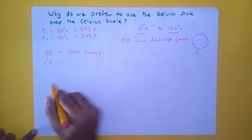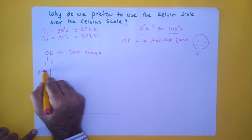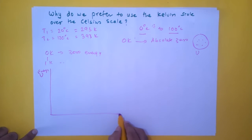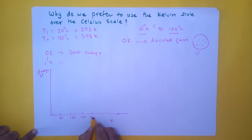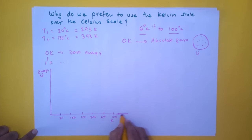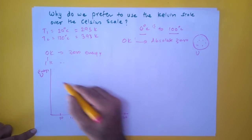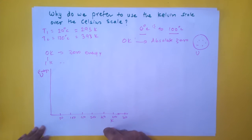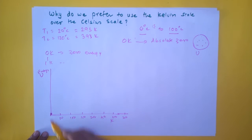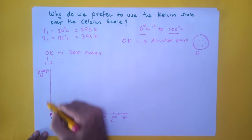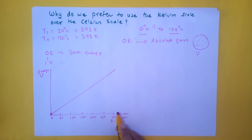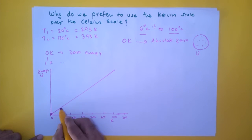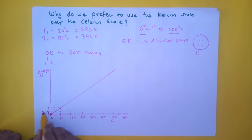If I plot internal energy (U) on the y-axis and Kelvin temperature on the x-axis — with values like 50, 100, 150, 200, 250, 300, 350 K — the graph starts at the origin (zero Kelvin, zero internal energy) and goes as a straight line upward. At 50 K, the gas has some amount of energy X, and at 100 K — double the temperature — the energy is 2X. So when temperature doubles, energy doubles exactly.